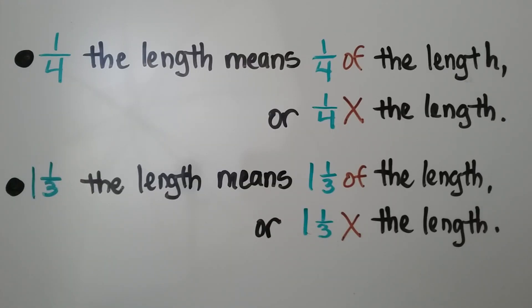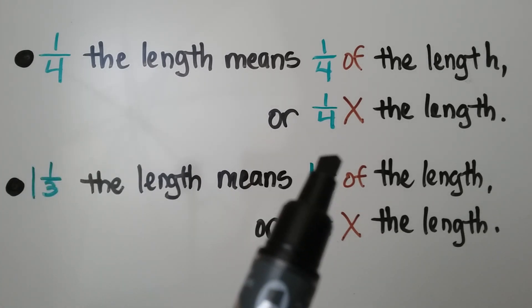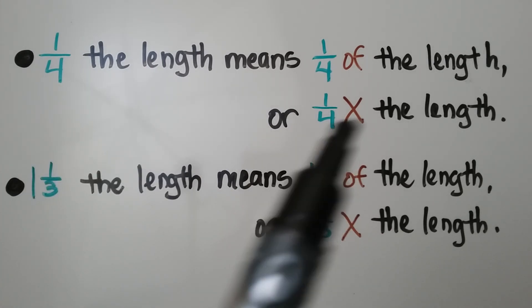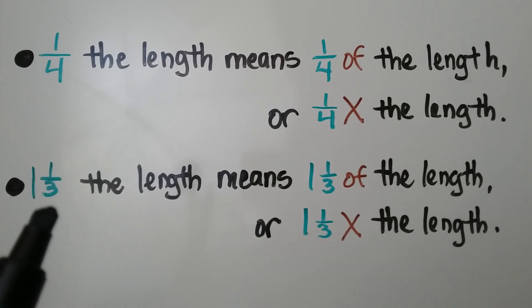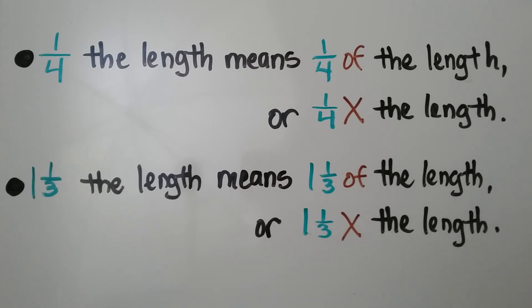When we're reading a word problem and we see 'one-fourth the length,' it means one-fourth of the length, or one-fourth times the length. If we see 'one and one-third the length,' it means one and one-third of the length, or one and one-third times the length. Because one-fourth is less than one whole, that length will be less than the other length. And because one and one-third is greater than one whole, that length will be greater than the other length.